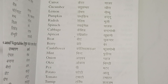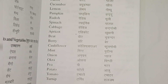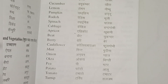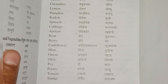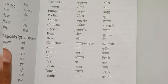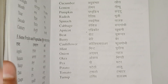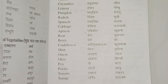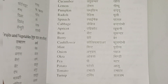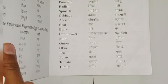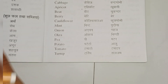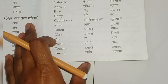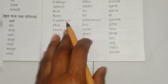Apricot — Khubani. Apricot looks like a peach, same light color as a peach. Beetroot — in Hindi it's called Chukundar. Berry — Bear.